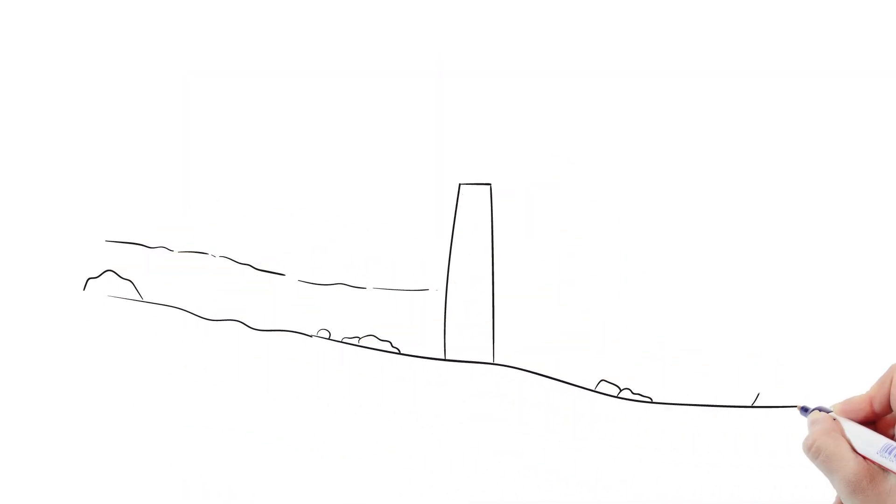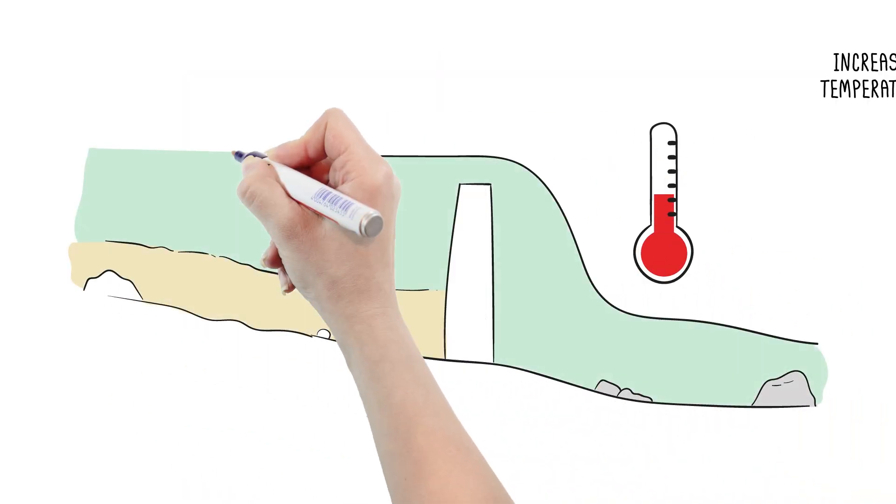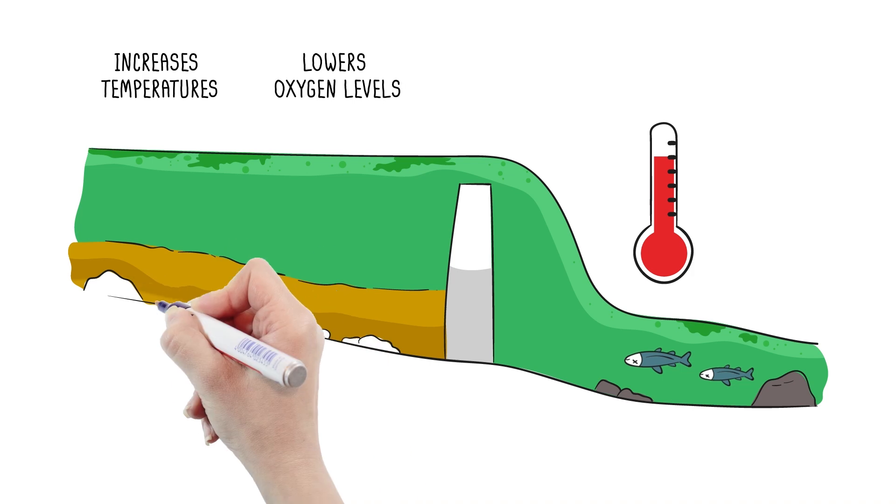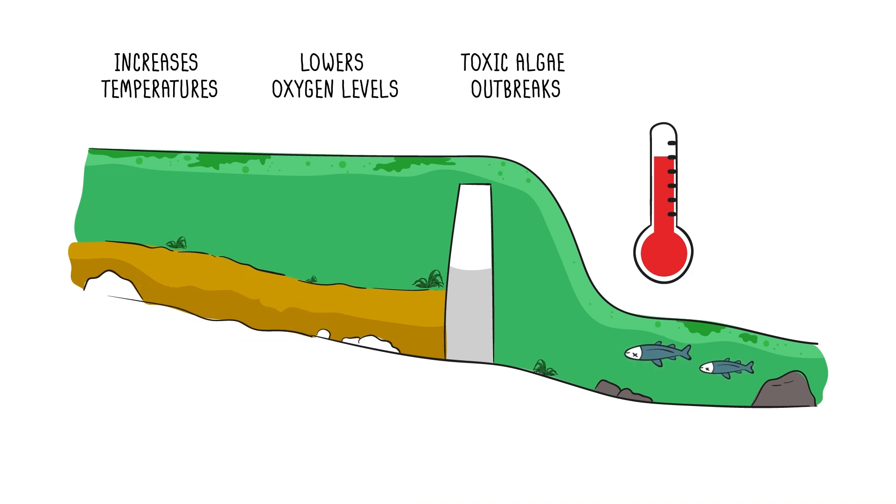Dams change the quality of the water by causing stagnation. This increases temperatures, lowers oxygen levels in the water, toxic algae outbreaks, and releases methane. Free-flowing rivers do not produce methane. Stagnant water does.